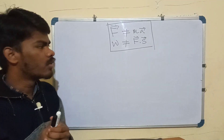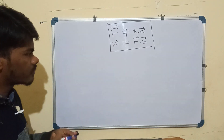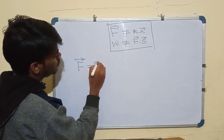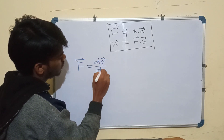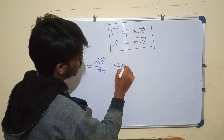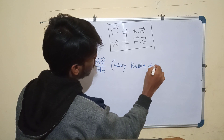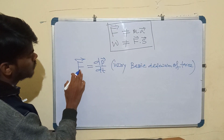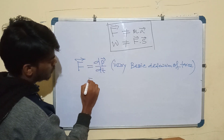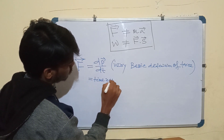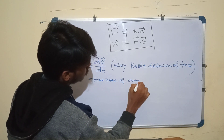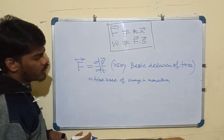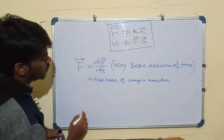Force is not equal to ma. Force is basically equal to the time rate of change in momentum — that is dp/dt. This is the very basic definition of force. Only when mass is constant can we say that F equals ma. But in general, F is equal to the time rate of change in momentum.